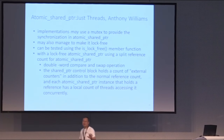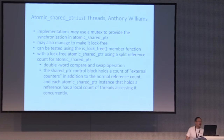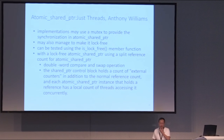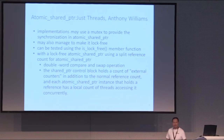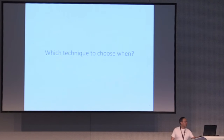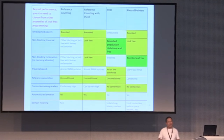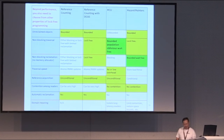Some implementations do lock-free just for the reference count, but they don't do lock-free end-to-end — all the way from allocation lifetime through synchronization to retiring and reclaiming the object. That is actually one of the most difficult problems in lock-free programming. The only implementation I know of that implements it end-to-end is Anthony Williams' implementation, which uses a double-word compare-and-exchange. The shared_ptr control block holds a count of external pointers to the normal reference count, and each atomic shared_ptr instance holds a reference to a local count of threads accessing it.